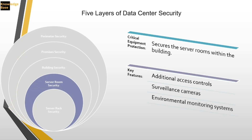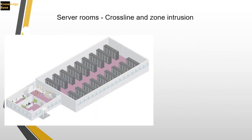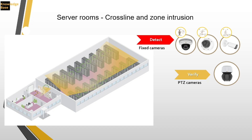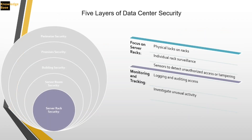Going to the fourth layer — server room security. We enter the building and then go into the server room, where only people who need to be there should be. There's additional access control to keep people out and additional surveillance inside to see what everyone is doing and if they are touching equipment they shouldn't be. Environmental monitoring is already present. We use detection cameras and PTZs for verification — if we suspect any motion, we can zoom in on that area. IP speakers are used to speak to whoever is inside, either with pre-recorded messages or live.